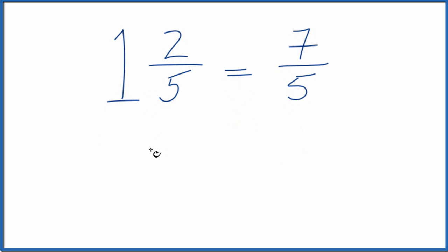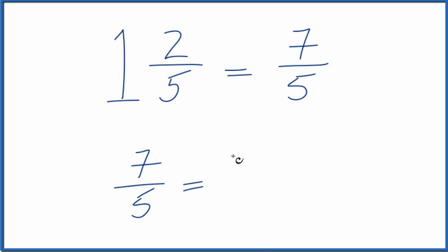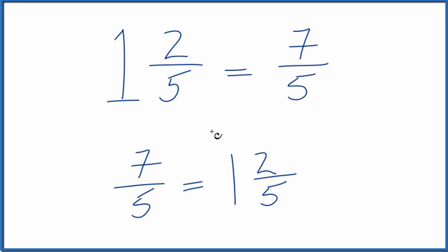And we can check this. We can take 7 fifths, the improper fraction, and convert it back to a mixed number. 5 goes into 7 one time with 2 left over. Then we bring that denominator — the 5 — across: 1 and 2 fifths. That's what we found before, so we did this correctly.